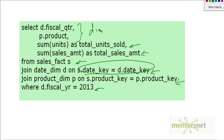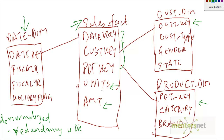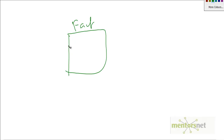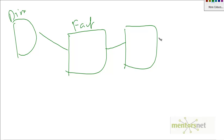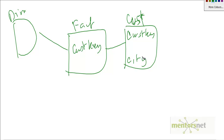There's another variant of the dimensional model called a snowflake. Let's look at how a snowflake would look. A snowflake has the regular fact table and dimensions as well, but the dimensions are somewhat normalized. For example, consider a customer dimension with a customer key and a customer city. Previously we only had city and state as attributes directly on the dimension. Now, let's say we take out city and normalize it — so we create a city dimension with a city key.